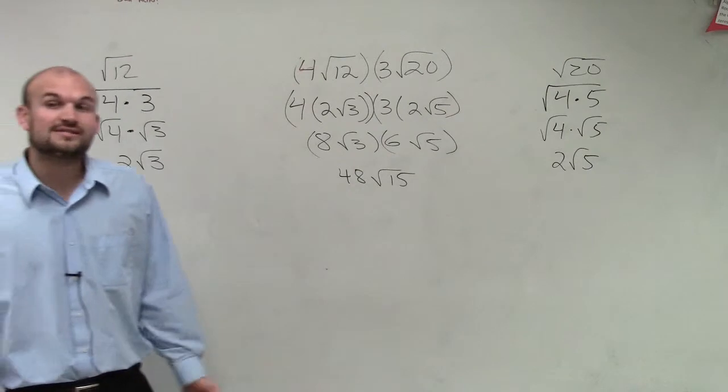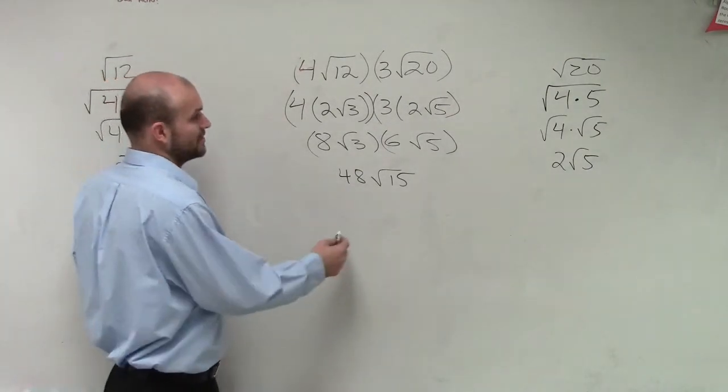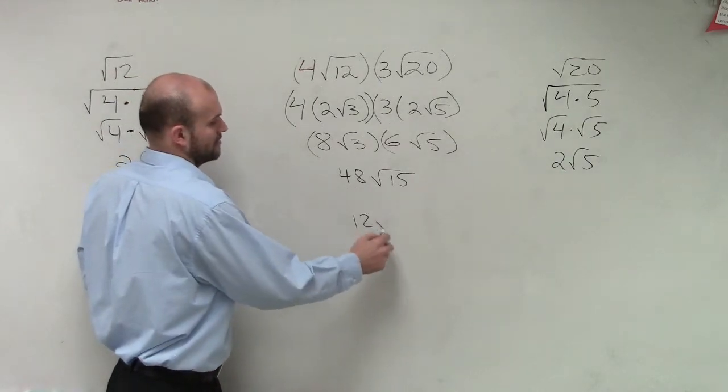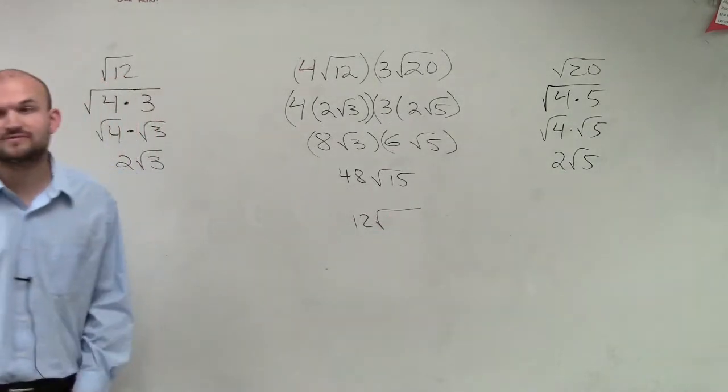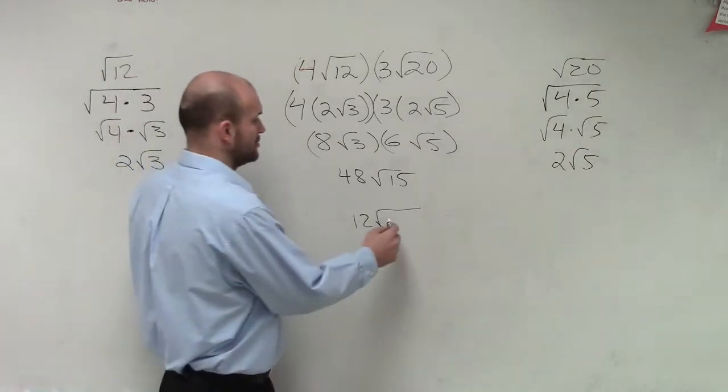Now, there is another way you could do this. You could simply just multiply 4 times 3 to give you 12. And then, you could possibly look at 12 times 20, and then that's going to give you 240.